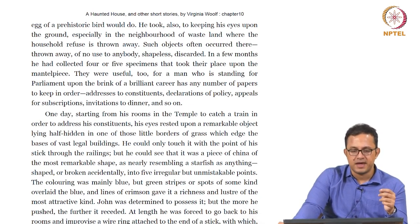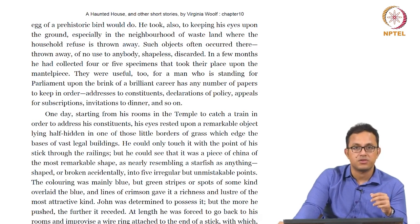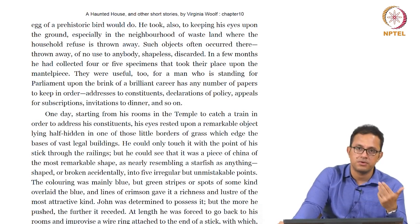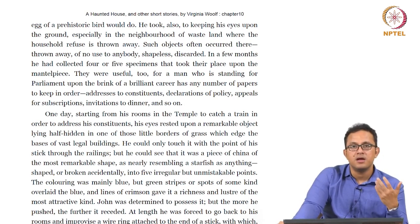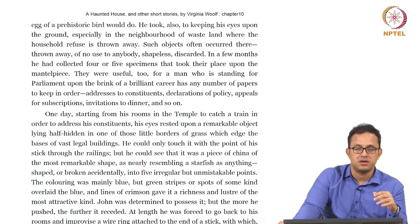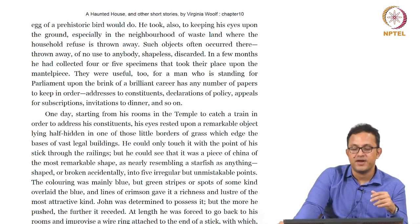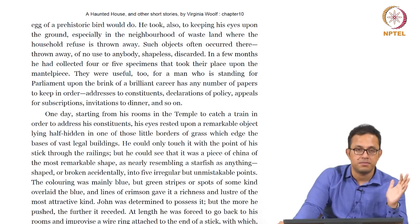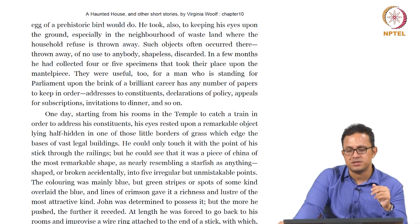'Such objects often occur there — thrown away, of no use to anybody, shapeless, discarded.' The idea of discarded, shapeless, abandoned objects is important here, because the bigger narrative of abandonment is that John abandons his political project. 'Politics be damned' becomes ironically a prophetic statement in the story — politics is essentially damned, abandoned, thrown away, discarded — something he does away with entirely.